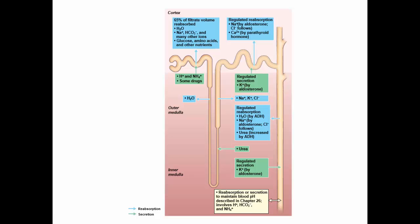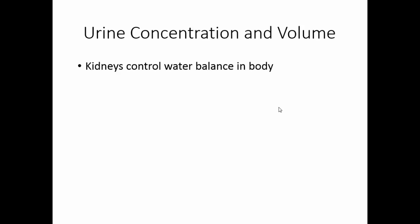Looking at the whole process: most of the stuff is reabsorbed here in the proximal convoluted tubule. In the loop we are concerned with water and ions primarily. As we get further along, we have aldosterone and parathyroid hormone controlled by hormones, and water controlled by antidiuretic hormone in the collecting duct. We have some active secretion of things like urea, potassium, and hydrogen. The kidneys are responsible for controlling water balance in the body, primarily a function of the nephron loop.